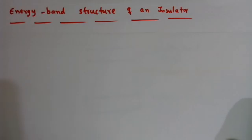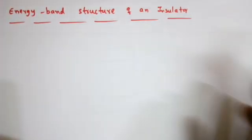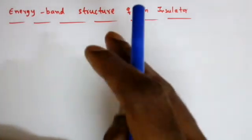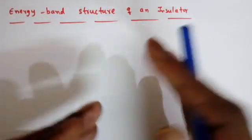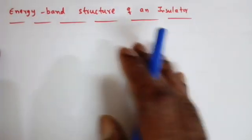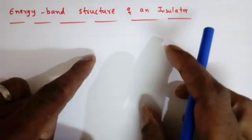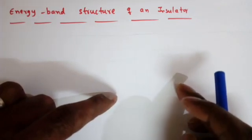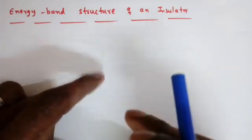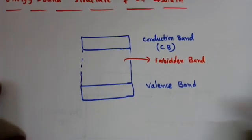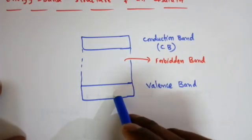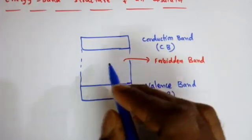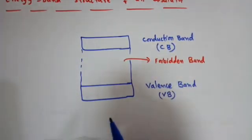Now we will see the energy band structure of an insulator. We can simply draw the two energy bands — the upper energy band called the conduction band (CB) and the lower energy band called the valence band (VB). The energy band that lies between the conduction band and valence band is called the forbidden band.